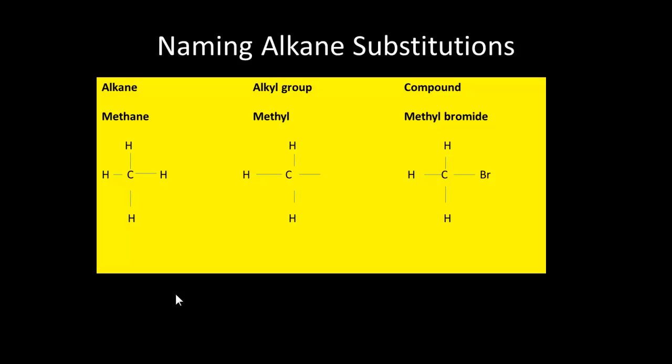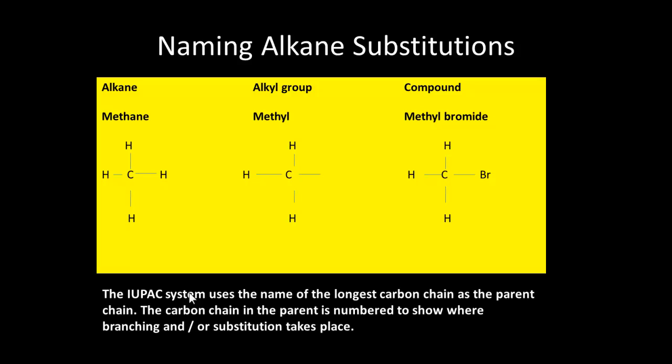So let's look at how we've started to name these alkanes. The parent here is methane so the group that it forms is methyl with a YL and so the compound will be methyl in this case bromide because we've replaced one hydrogen with a bromine. We use something which is called the IUPAC system and it's based on the carbon chain of the parent and we look for the longest carbon chain. IUPAC stands for the International Union of Pure and Applied Chemistry.